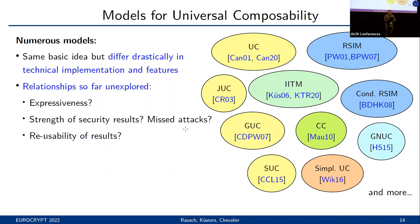And given the fractured state of the literature, what about the original goal of reusability? If we have several protocols, each of them having been analyzed in different models, can we still combine and compose those results — say, by first mapping a protocol, including all security results, to a different model?